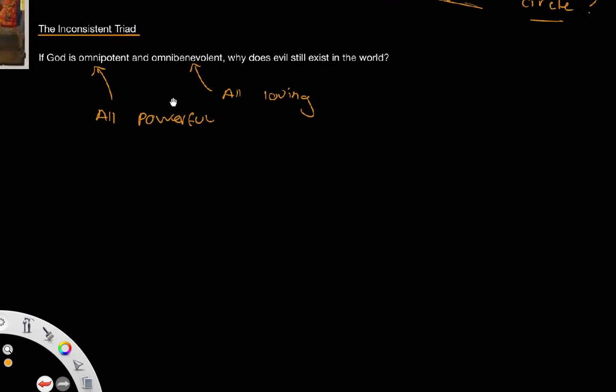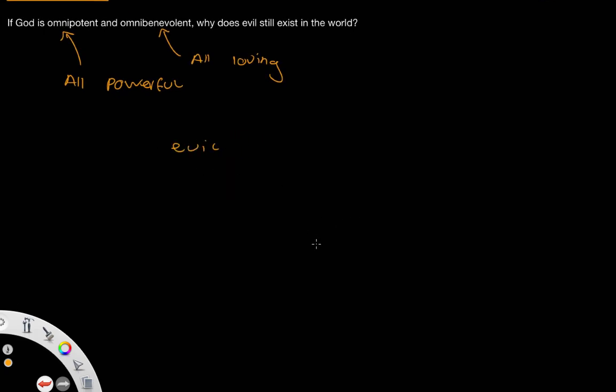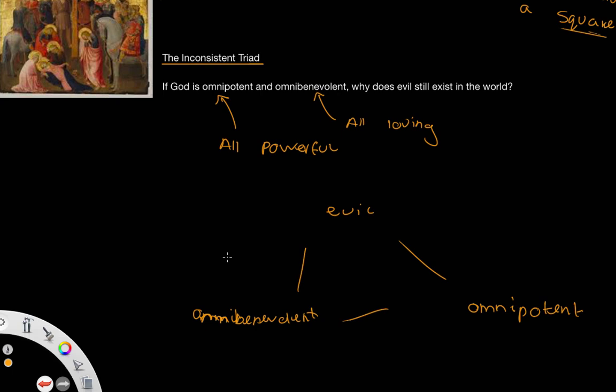The idea being that a loving God would want to prevent evil from happening in the world. And also, if he's all-powerful, then he physically can do that. He has the ability to snap his fingers and prevent all evil in the world. So why doesn't he? Why is there this inconsistent triad - the idea of there being evil, and then omnipotent, and then omnibenevolent? The idea that these three concepts cannot exist together.